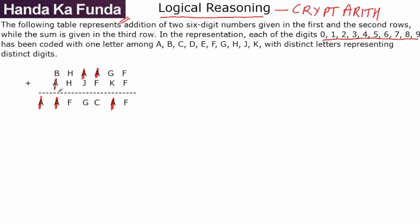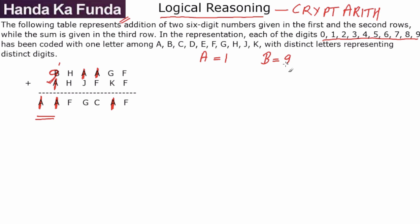Very similarly, you can figure out B. B plus 1 should actually generate 11, but B is a single digit. So what could have happened is if B is 9 and there was a carryover, because then 9 plus 1 of A plus 1 of carry would have generated 11. So A is 1 and B is 9.